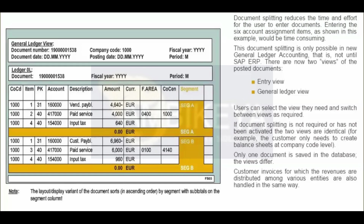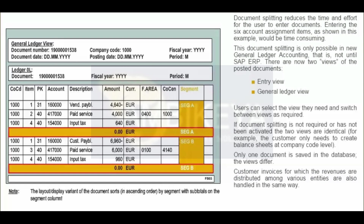You can specify in customizing that the system is to complete the missing entries automatically. The amended and now full amount is shown in the figure. You have to activate document splitting to ensure uniform splitting of the segment characteristic or any other entity. Systematic segmentation means that a zero balance position is reached for each document with regard to the entity in question. The document now consists of six line items. The vendor line item and the tax item are split across the two segments A and B, and the balance for each segment is now zero. The balance sheet and P&L statement can be created in full and the balance sheet is balanced.